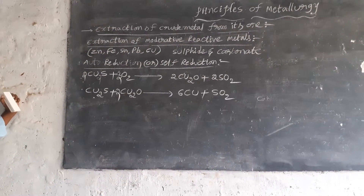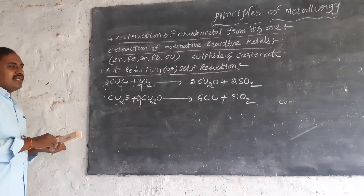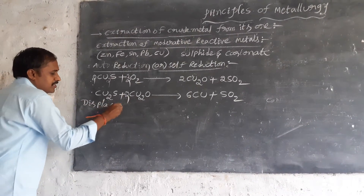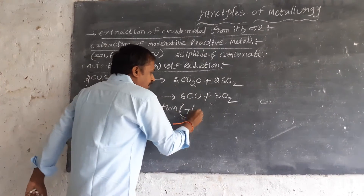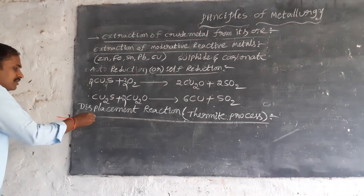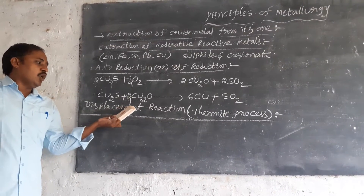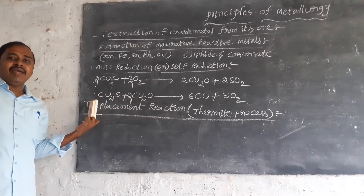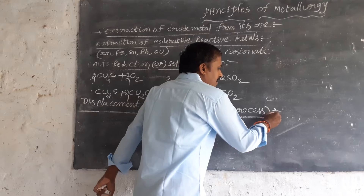After auto reduction, we follow a very important method called displacement reaction. It is also called as the thermite process. Displacement reaction means low reactive elements are replaced by high reactive elements.